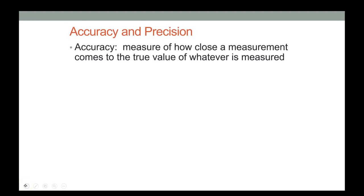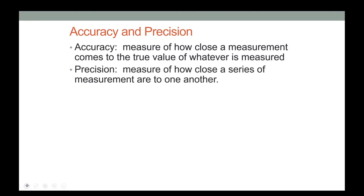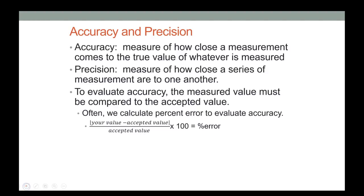Accuracy is a measure of how close a measurement is to the true, accepted value. Precision is more a measure of how close a series of measurements are to each other.